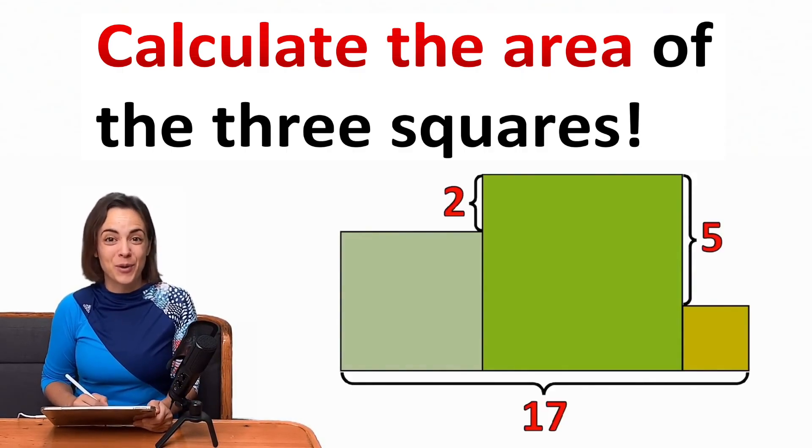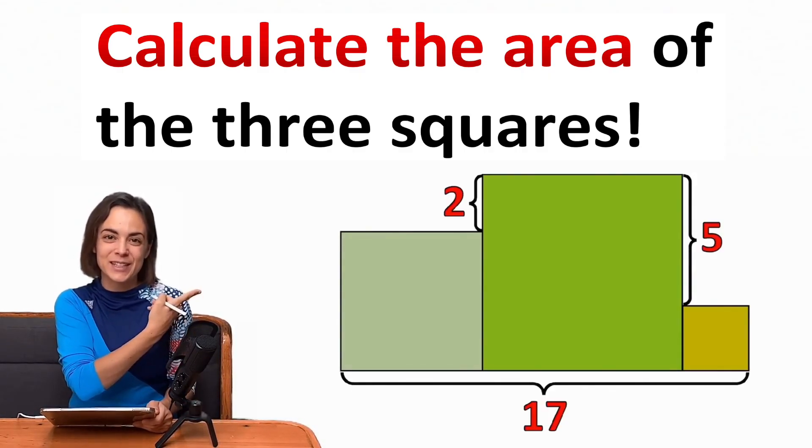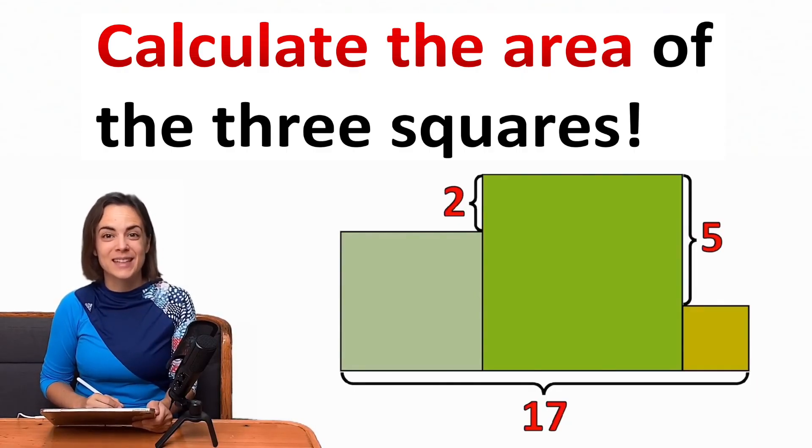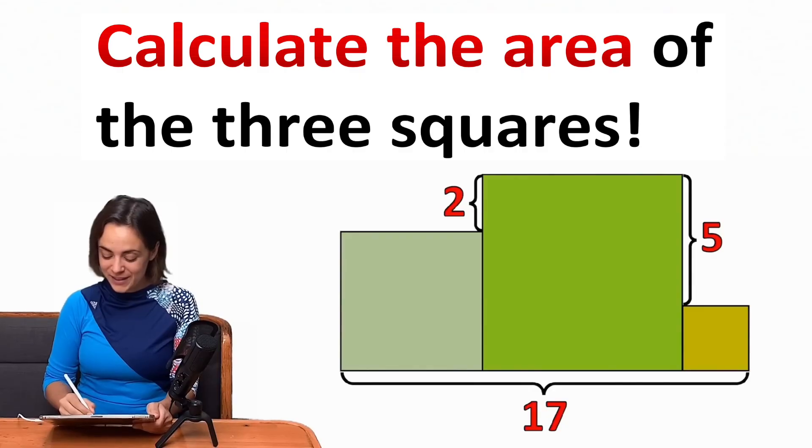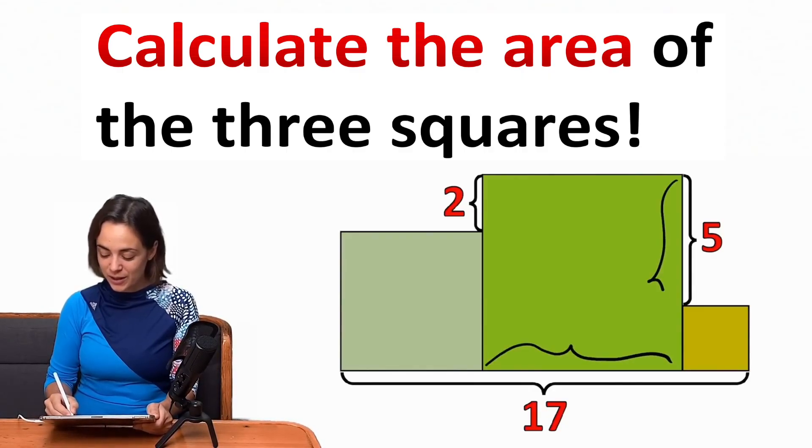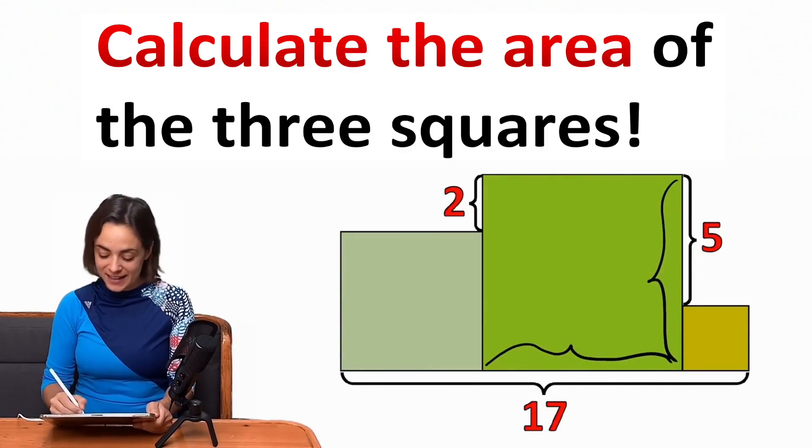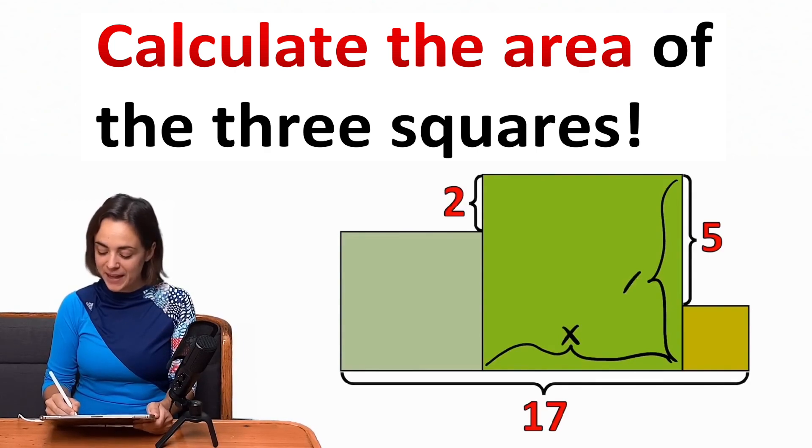Pause the video for a moment and see if you can carefully solve it with the few details given in the picture. My solution, which I'll reveal now, was to first look at only the middle square and say that its side length should be x.